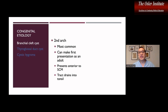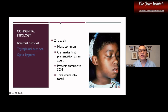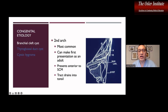The presentation of the second arch cyst is typically along the anterior border of the SCM — the sternocleidomastoid muscle — and then the tract drains into the tonsil. More specifically, the tract travels over cranial nerve 12 and cranial nerve 9, in between the bifurcation of the carotid, and into the tonsil.